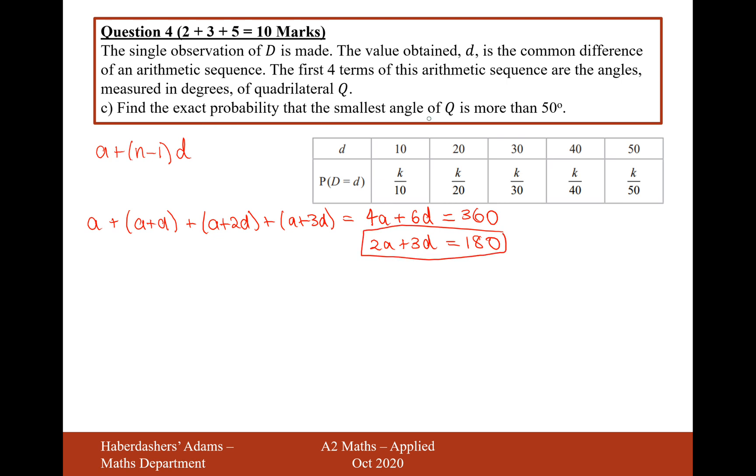Find the exact probability the smallest angle of Q is more than 50 degrees. So we have a number of different values that we can set to be d, but we want to find the exact probability the smallest angle of Q is more than 50. Now, the smallest angle of Q is going to be this value of a. So if a is more than 50, then that's already going to contribute 100 or at least 100 to this summation to make 180.